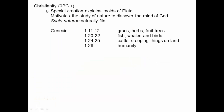Christianity unified Europe under a particular philosophy. Special creation from the Bible explains Plato's molds — it's a perfect match. Christianity motivated the study of nature to discover the mind of God. And Aristotle's scala naturae actually fits Genesis: first plants are made, then fish and whales and birds, then mammals, then people. This is essentially Aristotle's ladder — God starts at the bottom and works up to the top, so the scale of nature is reflected in the Bible.